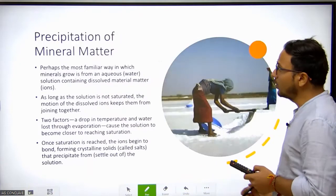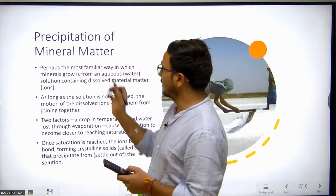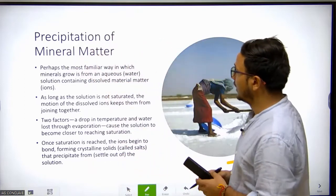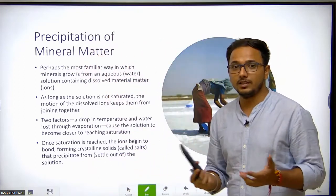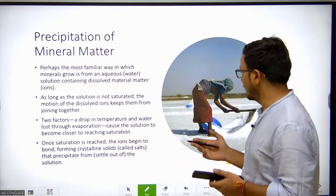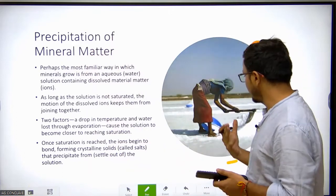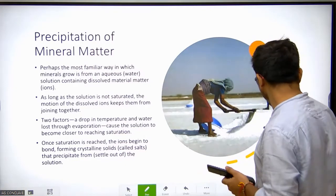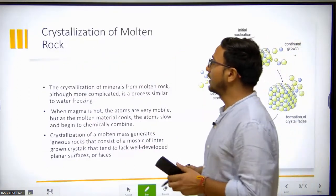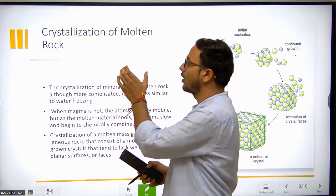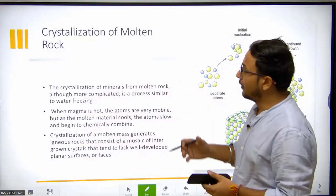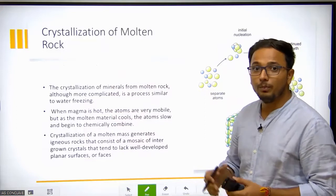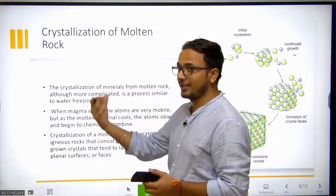In this session we will cover how minerals form through crystallization of molten rock by cooling. We have covered the precipitation of the mineral matter. The solid example for this is in India's Rajasthan, where you will notice the formation of salt. Now we will cover crystallization of molten rock.